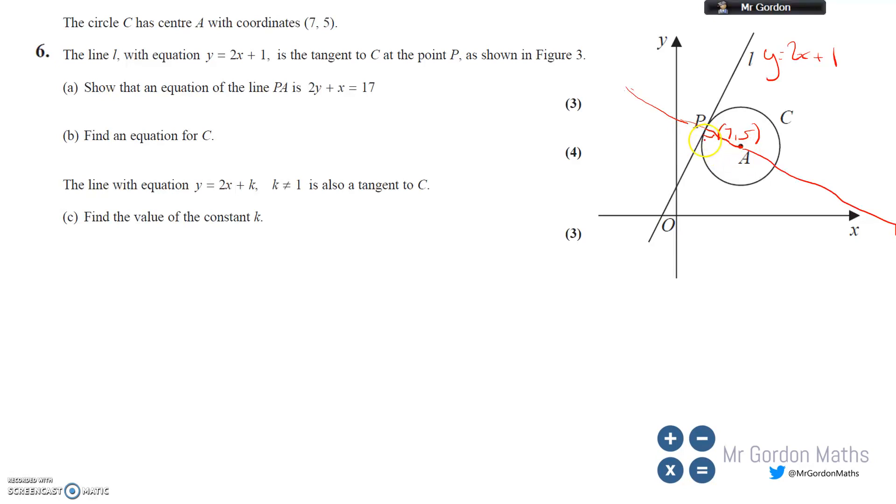We know a couple of things about the red line. We have a point on it: (7,5) going through the center. We know the relationship between its gradient and L's gradient. L's gradient is 2, and our gradient will be the negative reciprocal, so minus a half. That's everything we need - a point and the gradient.